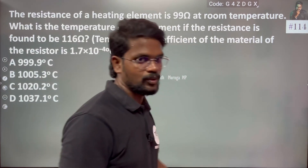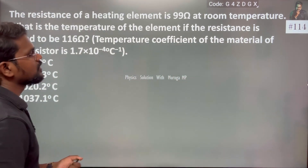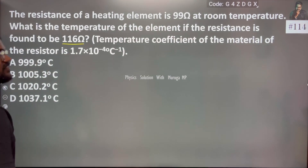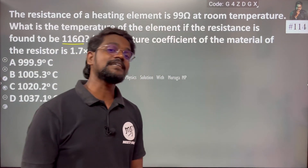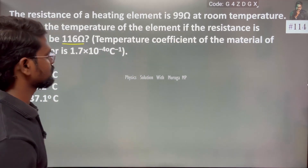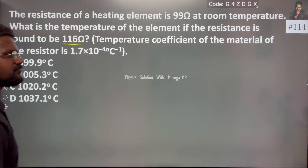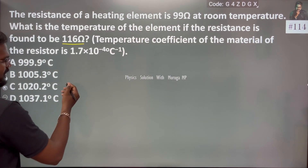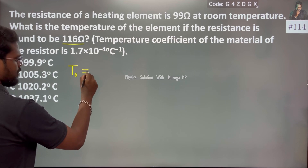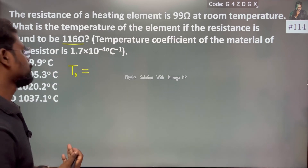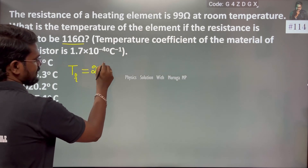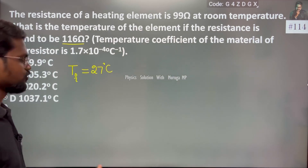The temperature we need to find is the unknown. After the temperature increases, the resistance becomes 116 ohm. Obviously, this is a conductor — a heating element. Let us write the given data. The initial temperature t0, or ti, is 27 degrees Celsius — this is normal room temperature.